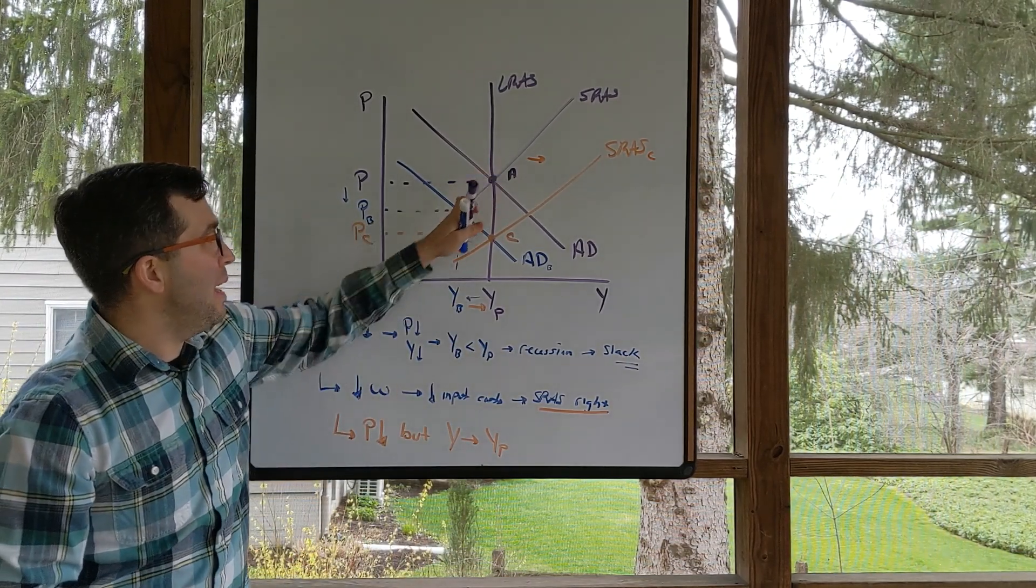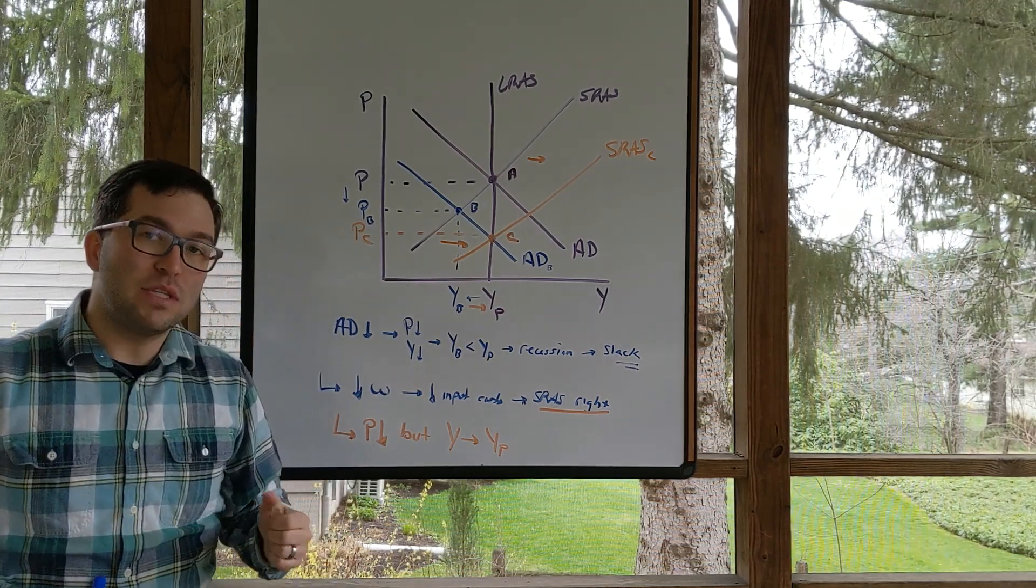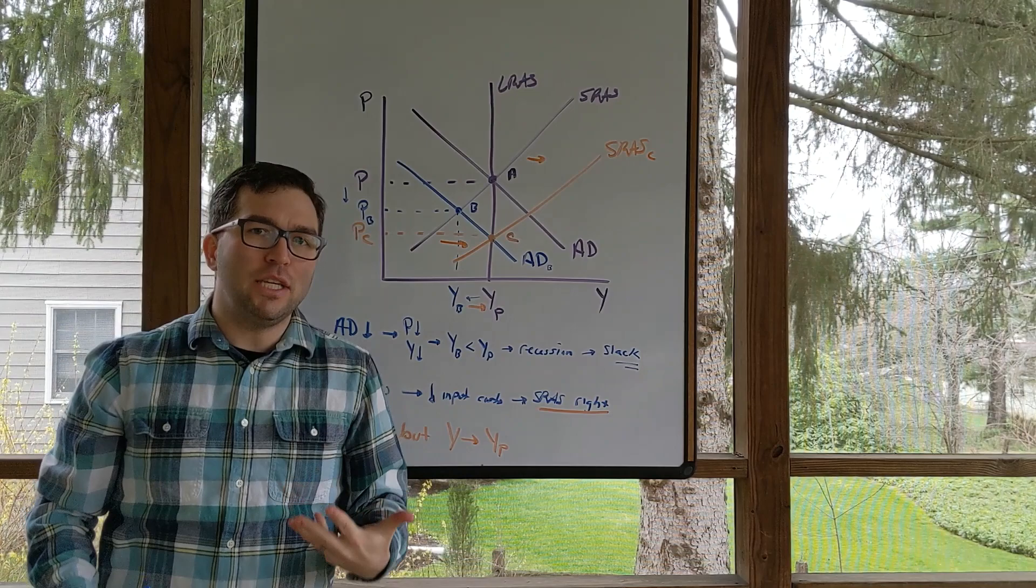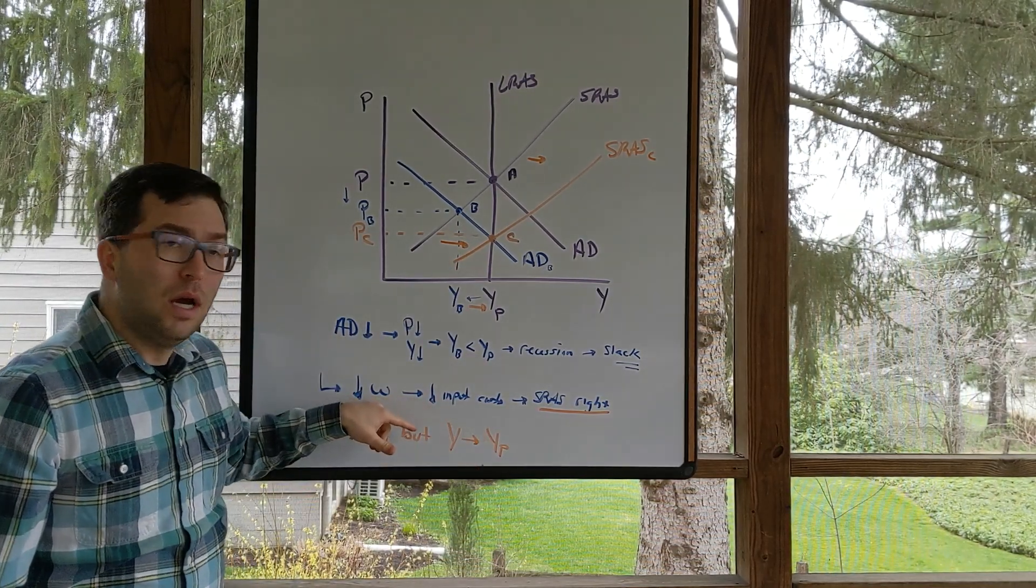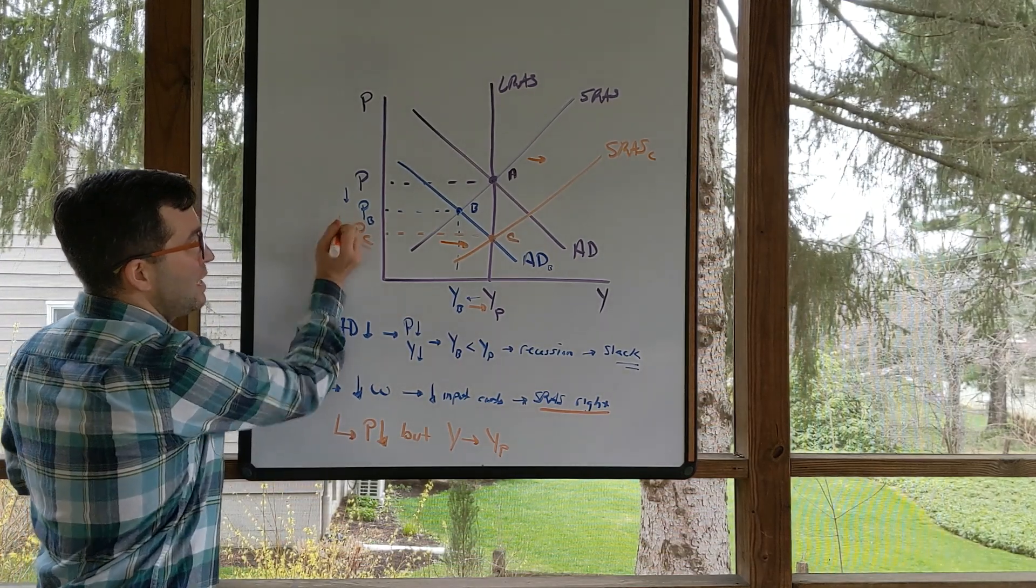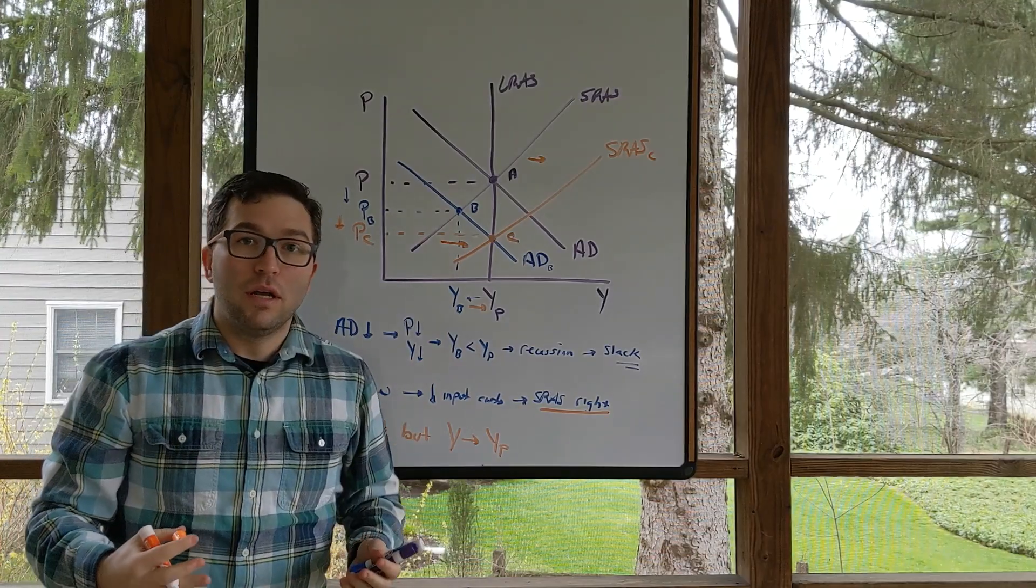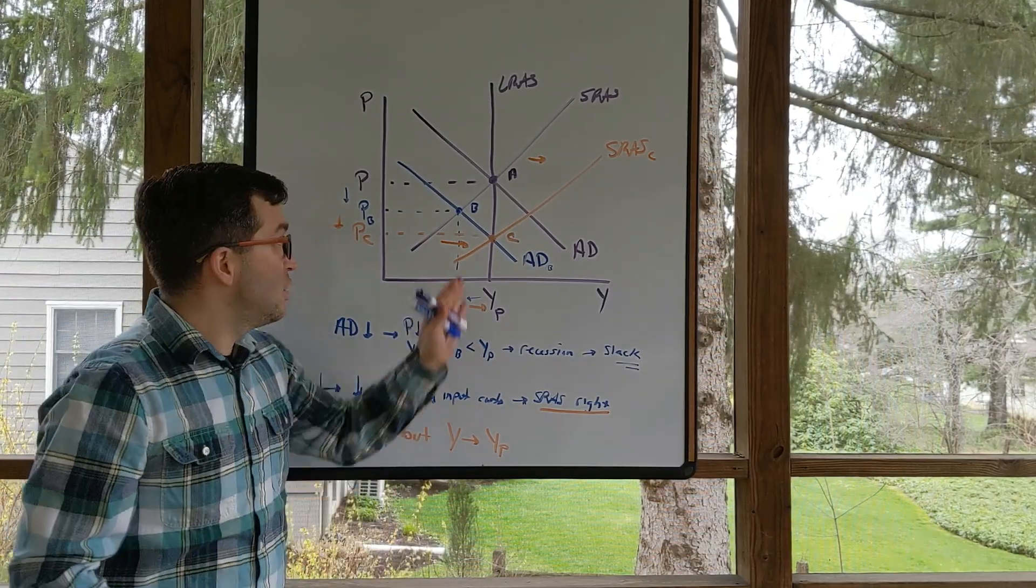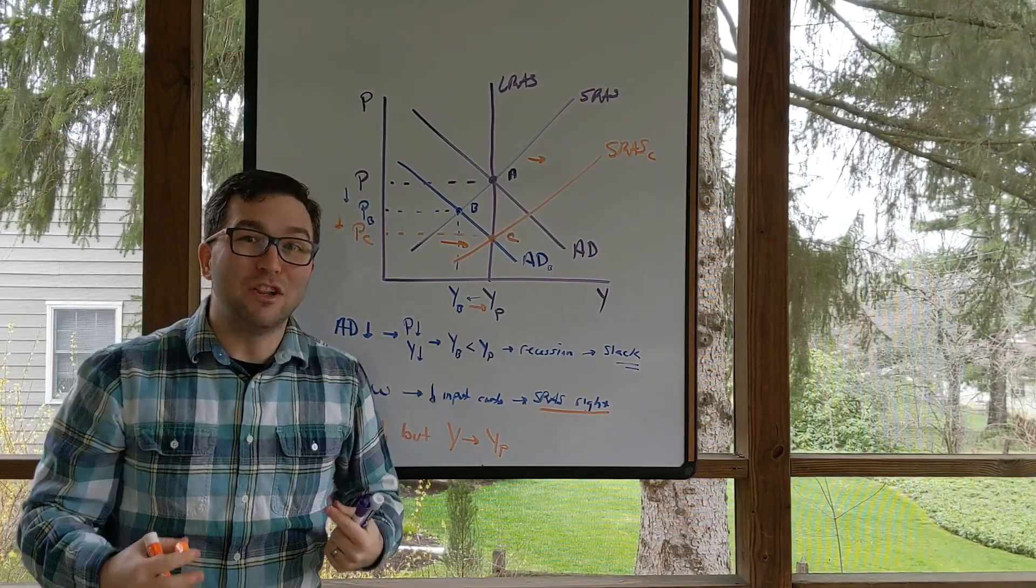So what happens going from A to B to C? The automatic adjustment process shows us that there's not a real change in the economy. Sure, people's wages are lower, but the price level has adjusted. We see a further decrease in the price level. This is what we mean by in the long run, prices will adjust, and so there's no real change. There's no real impact on output in the long run.